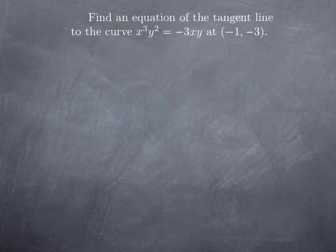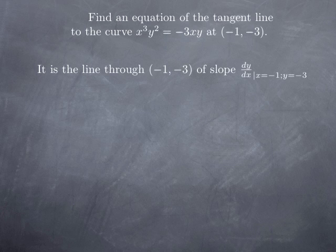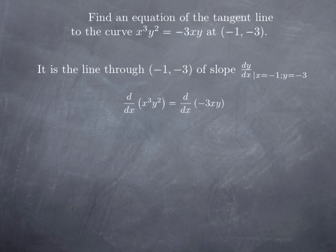Now let's say we want to find the equation of the tangent line to a certain curve at a given point. The curve has equation x cubed y squared equals negative 3xy, and the point is at coordinates (negative 1, negative 3). By definition, this is the line through that point with slope equal to the value of dy over dx when x is negative 1 and y is negative 3. So we proceed as before: differentiate both sides with respect to x, treating y as a function of x.